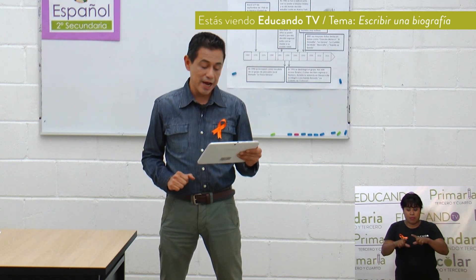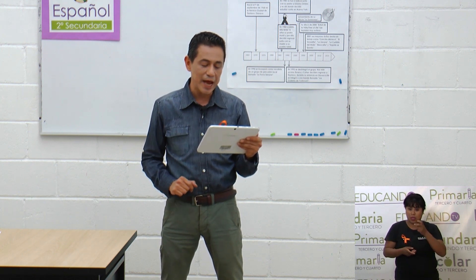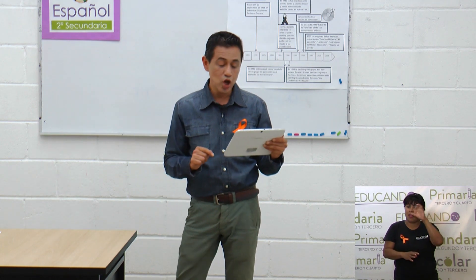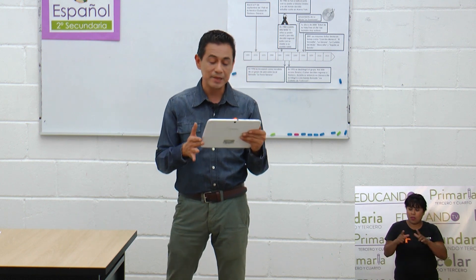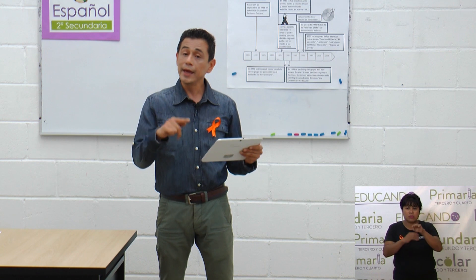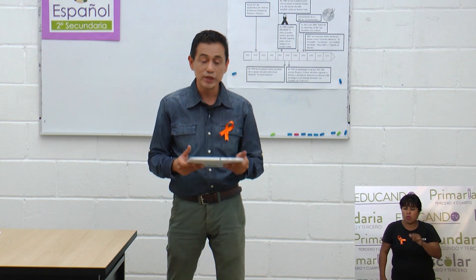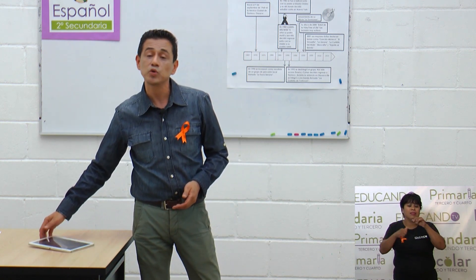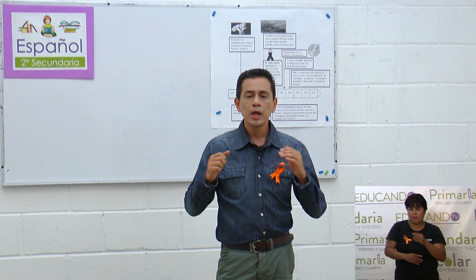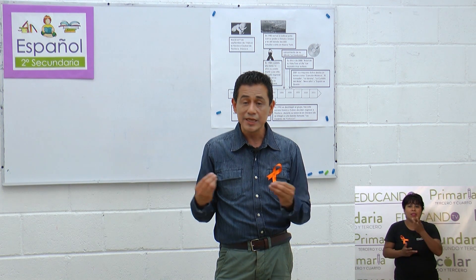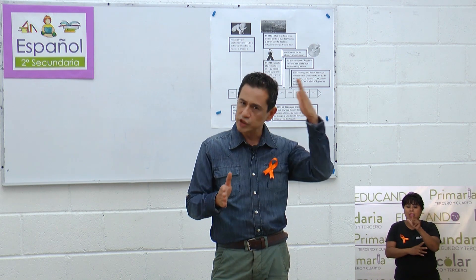En su disco del 2000, El Árbol de la Vida / Tree of Life, fue también muy exitoso. Pero el éxito internacional definitivo lo alcanzó en 2001 con el álbum Una Sangre / One Blood. Entre sus mayores éxitos destacan temas como La Zandunga, Canción Mixteca, El Venadito, La Llorona, La Cumbia del Mole, El Palomo, La Pecadora, Mezcalito, Zapata se queda, y tiene un último disco llamado Balas y Chocolate. Pues ya hicimos esta síntesis; estos son los acontecimientos que yo consideré importantes de la biografía de Lila Downs que leímos en la sesión anterior.